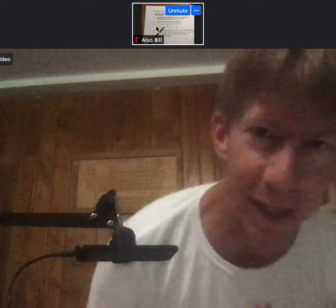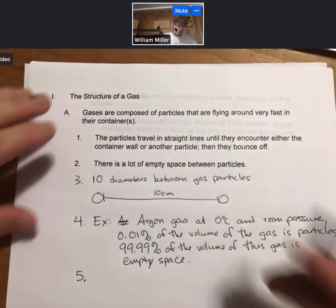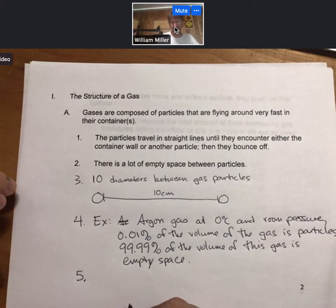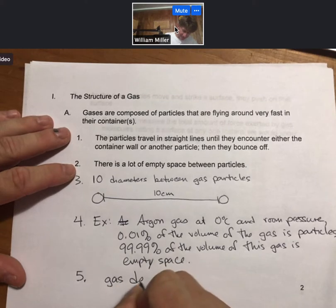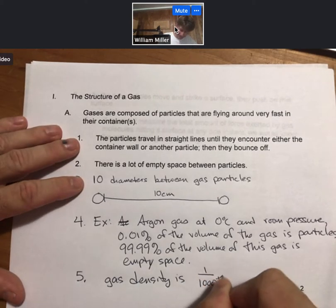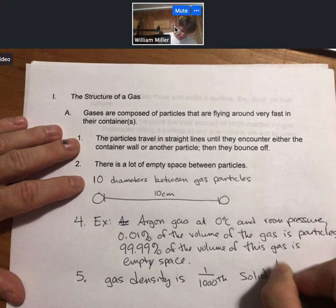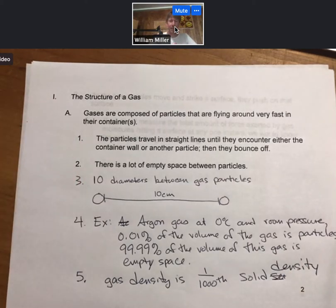And that's because in the solid phase the particles are much closer together. It is much more dense. In fact a good rule of thumb is that a gas has approximately one one-thousandth of the density of a solid. Gas density is one one-thousandth solid density. And that's why you can walk through gas.